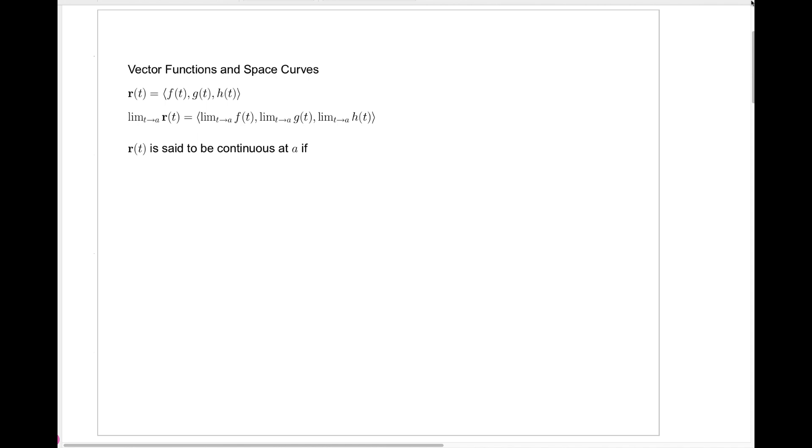Today we're going to start talking about vector functions. We'll start with a vector function r of t, which is just a vector whose components are functions of t. Here we have f of t, g of t, and h of t for the three components of the vector function r of t.